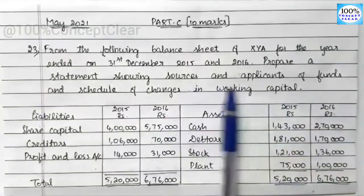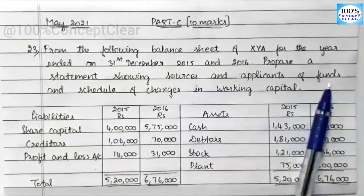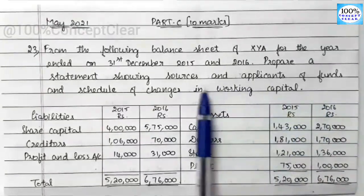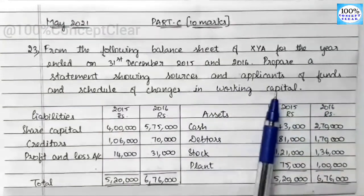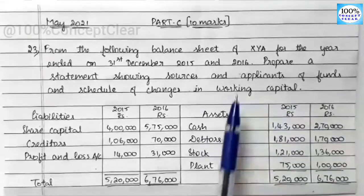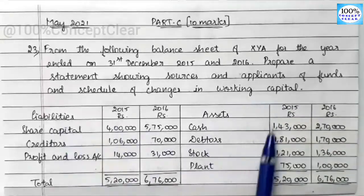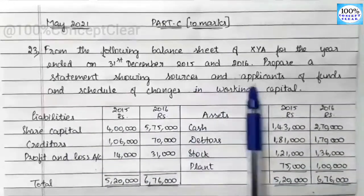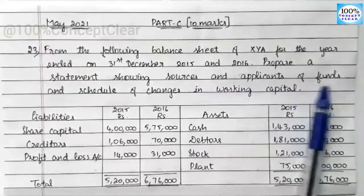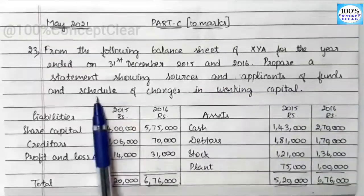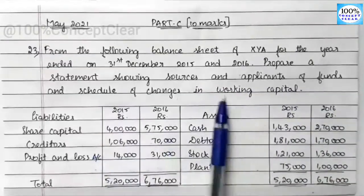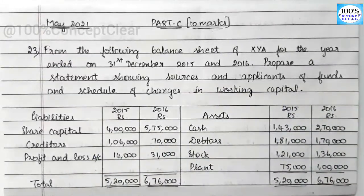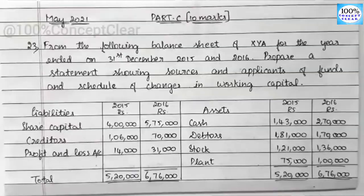In the question, we have sources and applications of fund — that is, we have a fund flow statement. We have balance sheet information. We will discuss the sources and applications of fund and schedule of changes in working capital. We have to discuss the balance sheet with liabilities and assets.